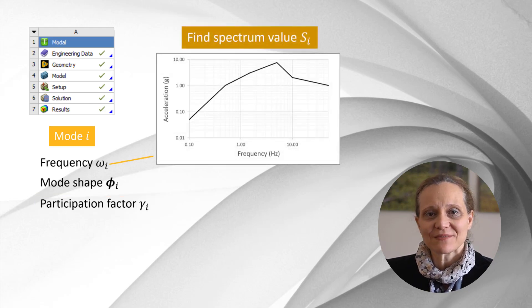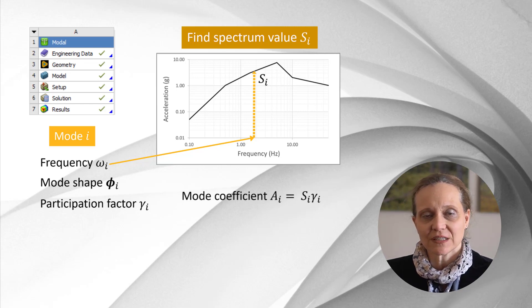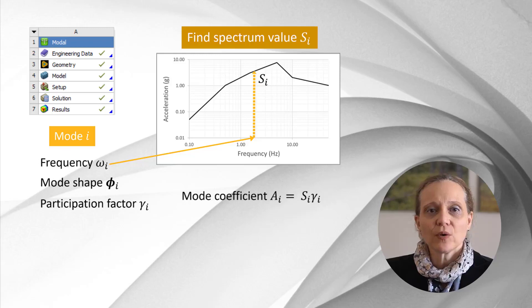For each frequency, we can get spectrum value s. The mode coefficient ai is defined as a factor that is multiplied by the eigenvector to give the actual displacement in each mode. Mode coefficients can be determined from the participation factor and the spectrum values.